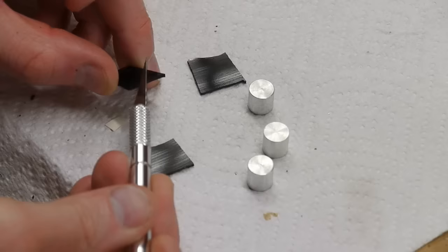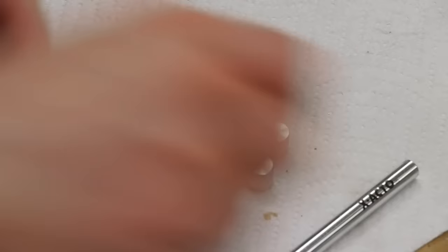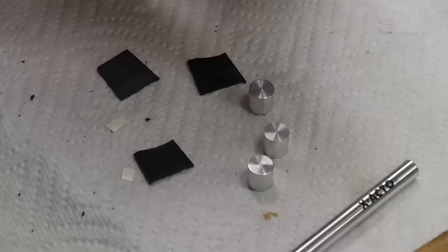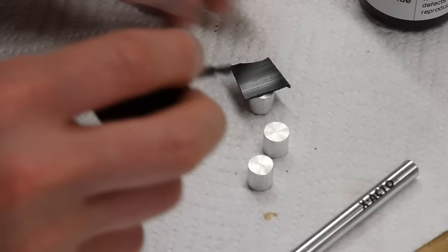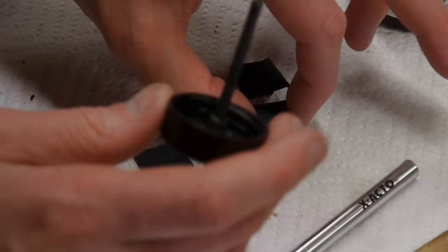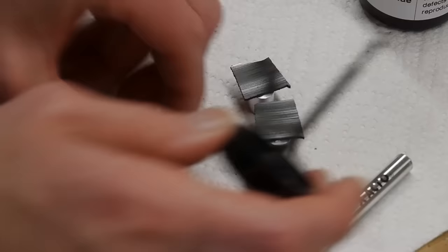The next problem is that the electron microscope cannot image things that are electrical insulators. The microscope works by firing electrons at the object that you want to inspect, and if the object is an insulator those electrons get trapped inside. Eventually if enough electrons get trapped there, future electrons coming in will be repelled because like charges repel each other.